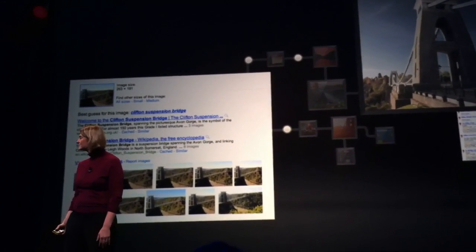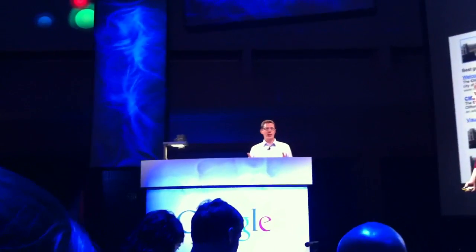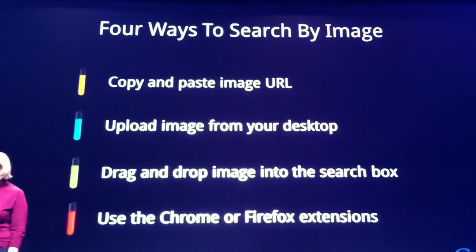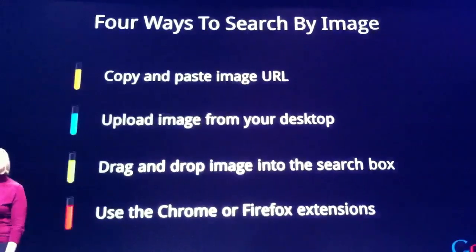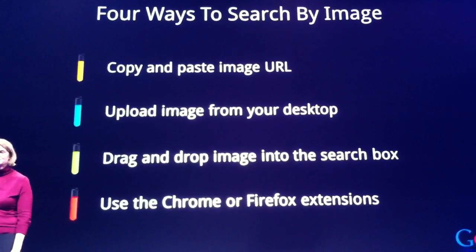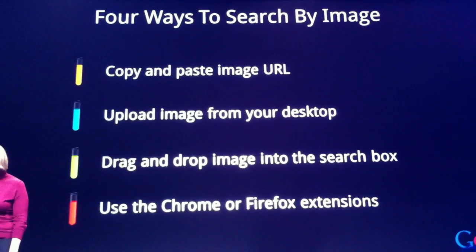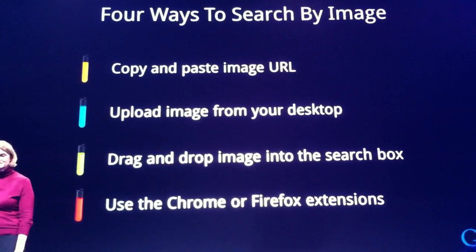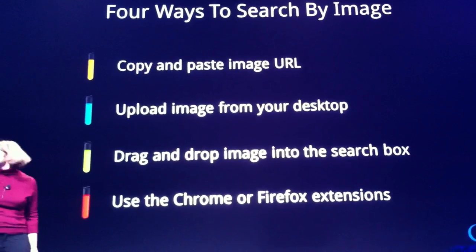I want to tell you a little bit about how this feature is getting rolled out. It's rolling out globally on images.google.com over the next few days. When you see a little camera icon in your search box, that means you have access to Search by Image. There are four ways you can access this feature: you can copy and paste an image URL, you can upload images directly from your desktop, you can drag and drop images right into the search box as shown in the demo, and finally, we're also announcing Chrome and Firefox extensions, which means Search by Image is one click away from images as you discover them on the web.